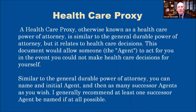One thing that applies to both the general durable power of attorney and the health care proxy is that you can name one person — usually a spouse if you're married — and then name a successor agent in case your spouse predeceases you or is not competent or capable of handling those duties. You can identify that successor agent in both documents, and in fact you can name as many as you feel comfortable naming: first successor agent, second successor agent, et cetera. I generally recommend that you try very hard to identify at least one successor agent just in case it's needed.